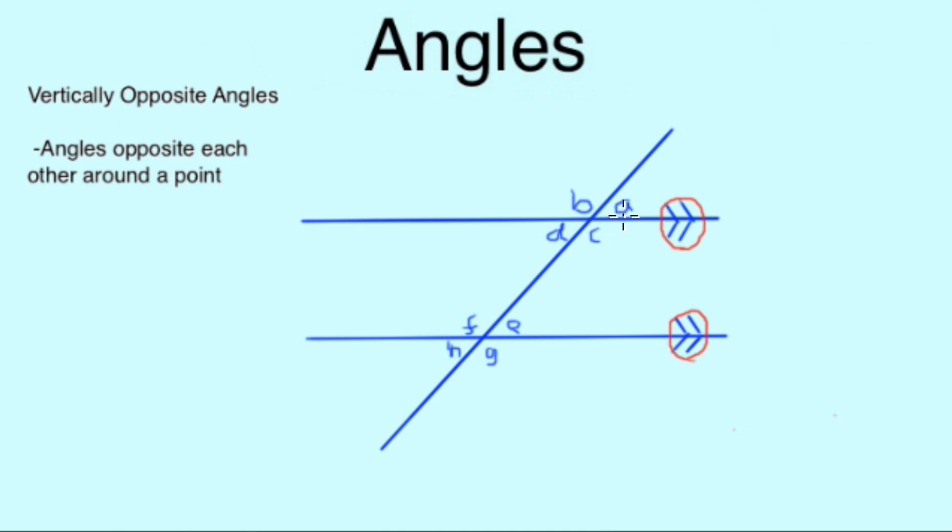Our first example is vertically opposite angles. A and D, as they appear here, are equal angles as they are vertically opposite, which also means B and C are, as well as F and G and H and E.